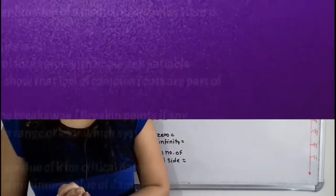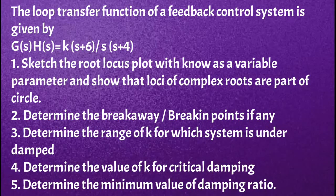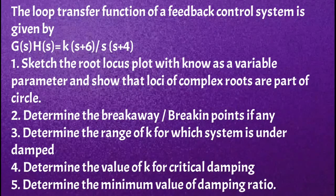Now first I will read what is the given problem. The loop transfer function of a feedback control system is given by G(s)H(s) equal to K(s+6) divided by s(s+4). Question 1: sketch the root locus plot with K as a variable parameter and show that loci of complex roots are part of a circle. Second: determine the breakaway or break-in points if any. Third: determine the range of K for which the system is underdamped. Fourth: determine the value of K for critical damping. Fifth: determine the minimum value of damping ratio.